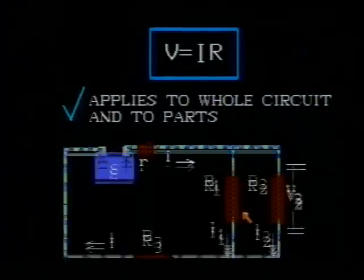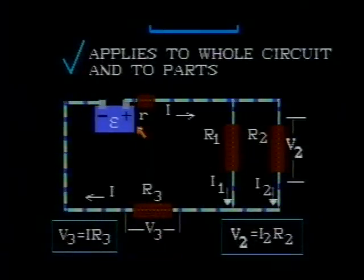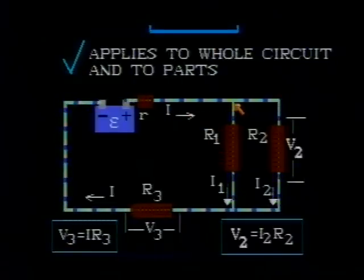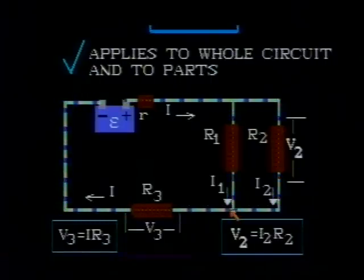Here is a typical DC circuit consisting of a battery and some resistors in series and in parallel. A current I through the battery splits at this point into two branches, I1 and I2, which recombine at this point.